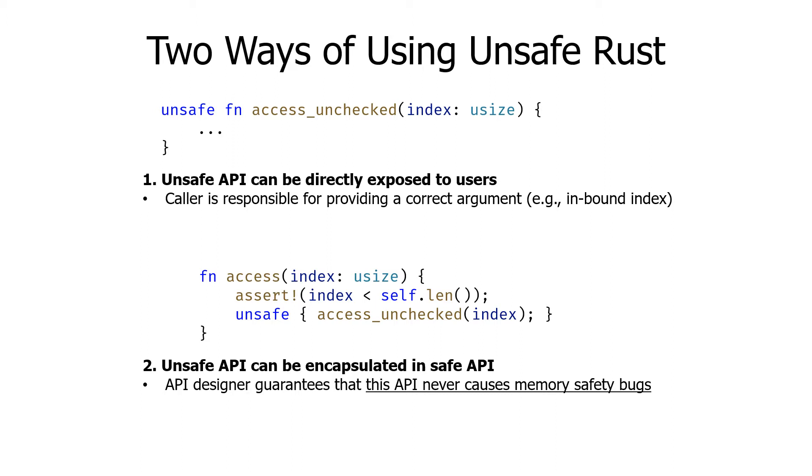Second, unsafe APIs can be encapsulated in safe APIs. In this case, the API designer guarantees that this API never causes safety violation, and the caller can use these APIs just like other safe functions in Rust. We focus on the bugs in the second case. If an encapsulated API does not correctly check the invariant for internal unsafe code, it allows a user of the API to cause memory safety bugs without using the unsafe keyword. Such bugs are generally considered serious bugs because they break the trust boundary between Rust packages.